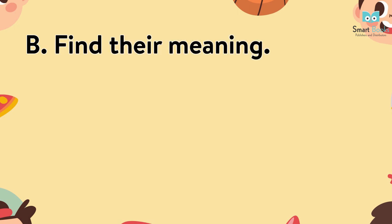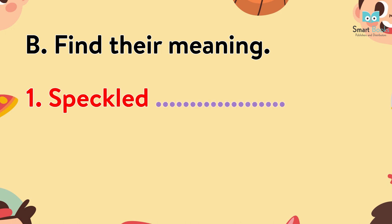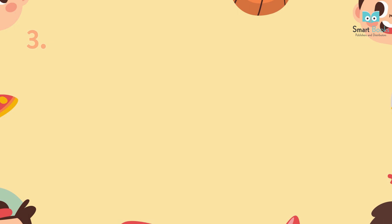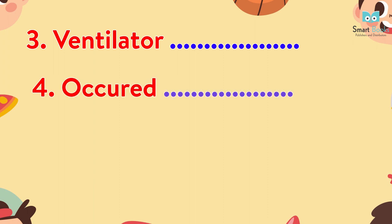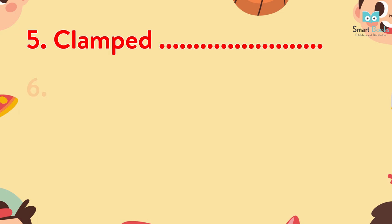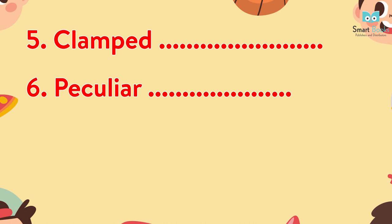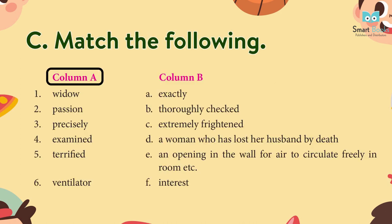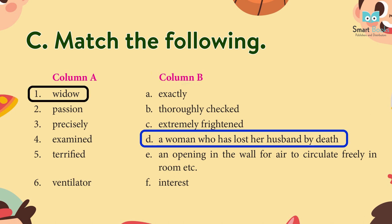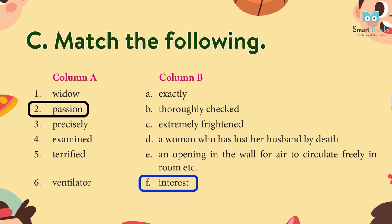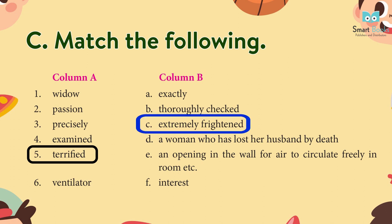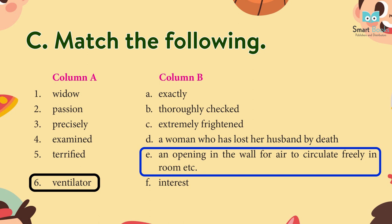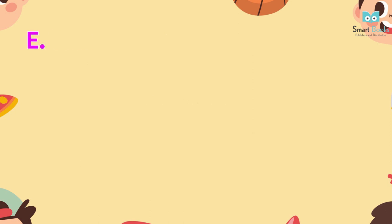Find Their Meaning: 1. Speckled — having very small marks of a different colour from the surface on which they are found. 2. Terrible — very unpleasant or serious or of low quality. 3. Ventilator — an opening or a device that allows fresh air to come into a closed space. 4. Occurred — to come into existence. 5. Clamped — to hold something very firmly in a particular position. 6. Peculiar — different from what is usual or normal. Match the following: Widow — a woman who has lost her husband by death. Passion — interest. Precisely — exactly. Examined — thoroughly checked. Terrified — extremely frightened. Ventilator — an opening in the wall for air to circulate freely in a room.